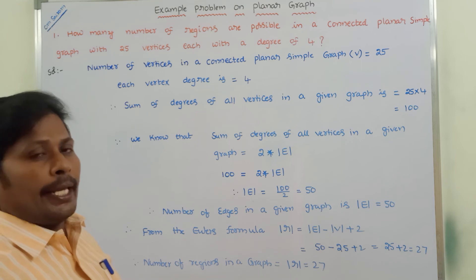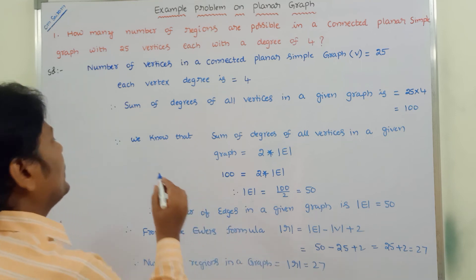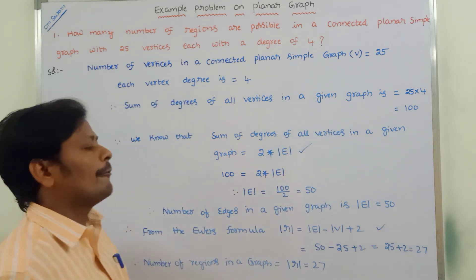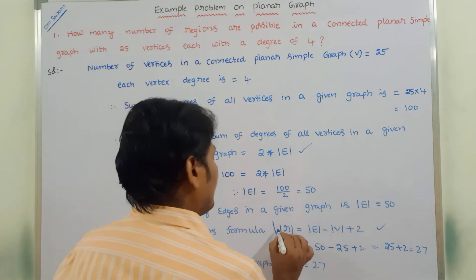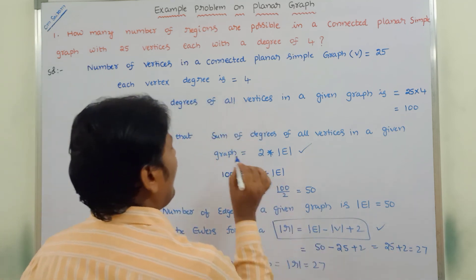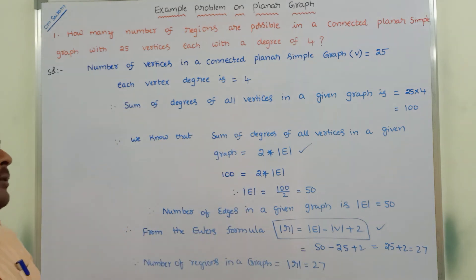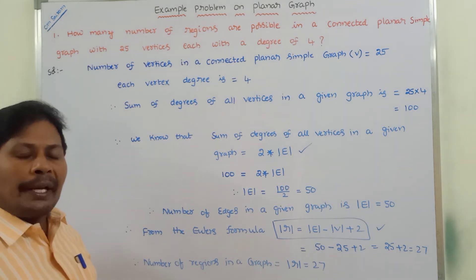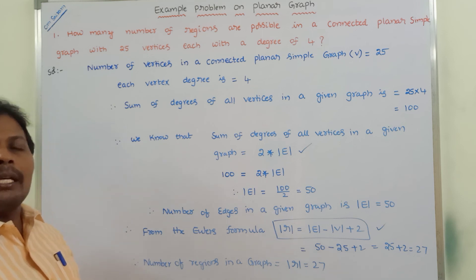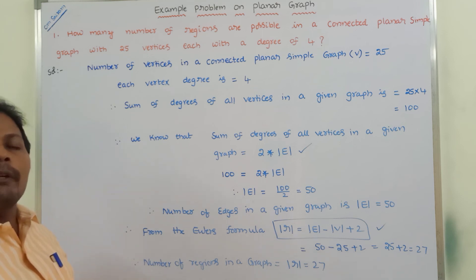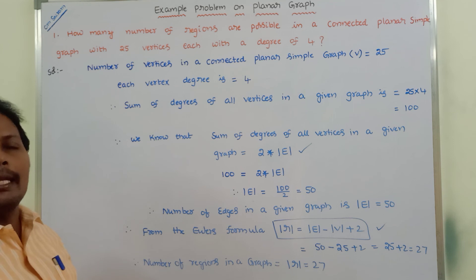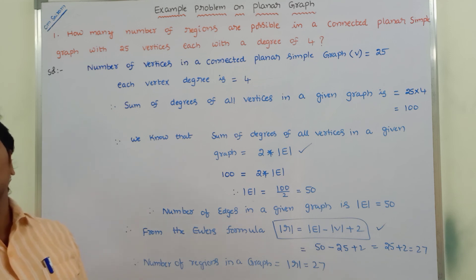In this way we find the number of regions in a given graph using the sum-of-degrees formula, the handshaking lemma, and Euler's formula. Thank you all for watching this video. If you like this video please click the like button, share it with your friends and classmates, and put any doubts in the comment section — I will clarify your doubts.